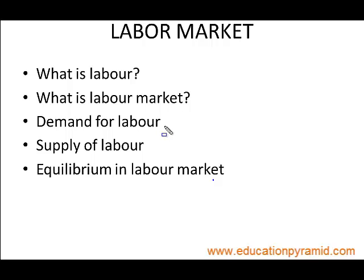Demand for labour means the working hours which are demanded by the employer at a certain wage level. The supply of labour is the working hours the labour is willing to sell at a certain wage level. The equilibrium point is the point where both buyers of the labour and sellers of the labour agree to buy and sell at a certain wage level — that is, where demand for labour is equal to supply of labour.